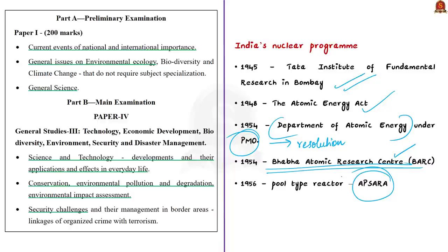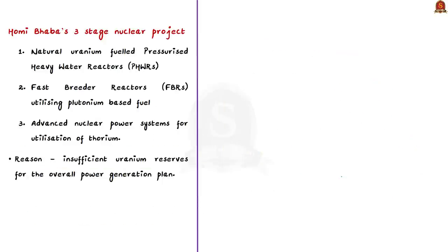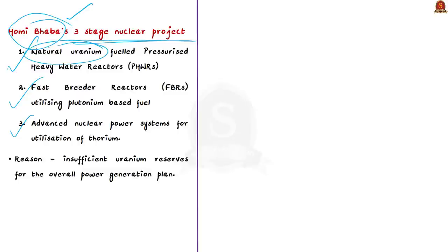India adopted this three-stage nuclear power program because of insufficient uranium reserves for overall power generation. Natural uranium occurs as two isotopes: uranium-238, abundantly available at 99.27%, and uranium-235, which is scarce at only 0.72%. Only uranium-235 can sustain a fission chain reaction and is therefore called a fissile material. Apart from uranium-235, two other fissile materials can fuel nuclear reactors — plutonium and uranium-233 — but both are man-made and not available in nature.